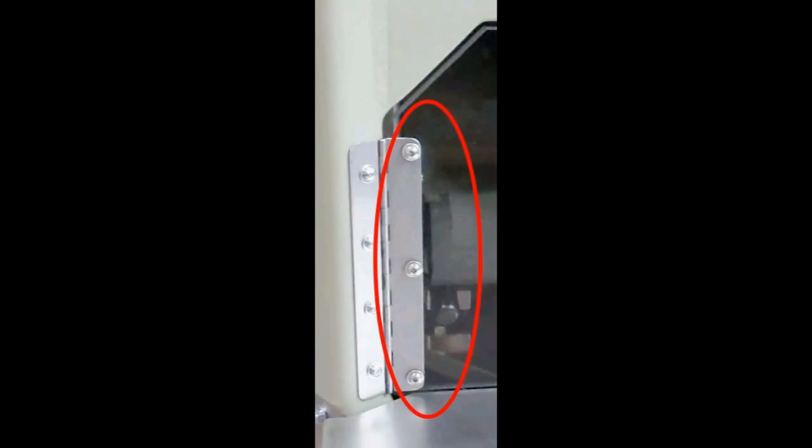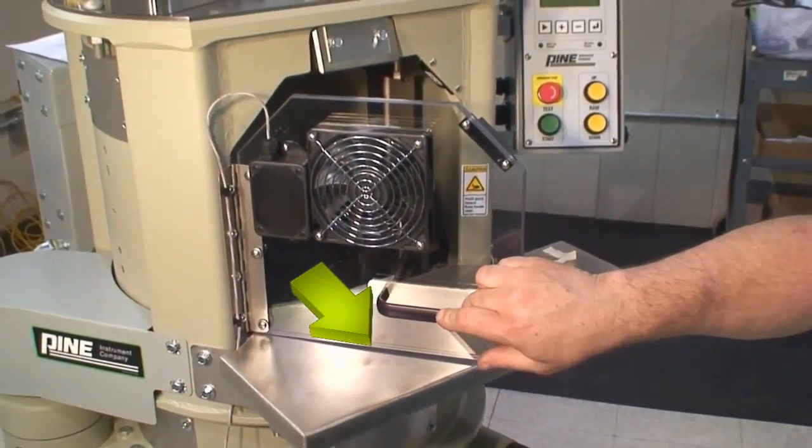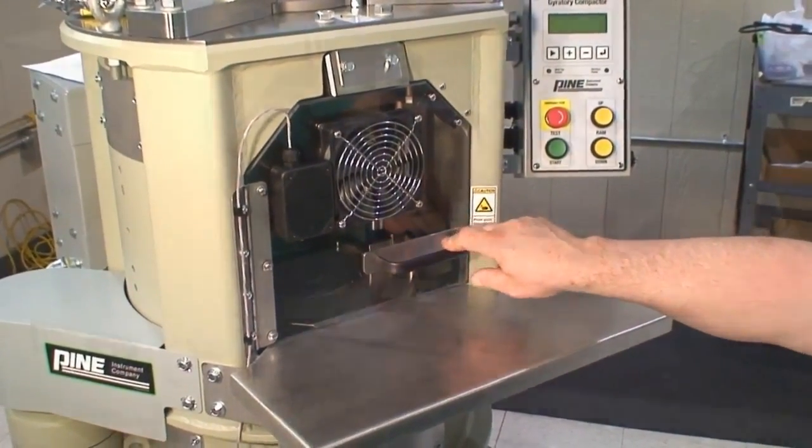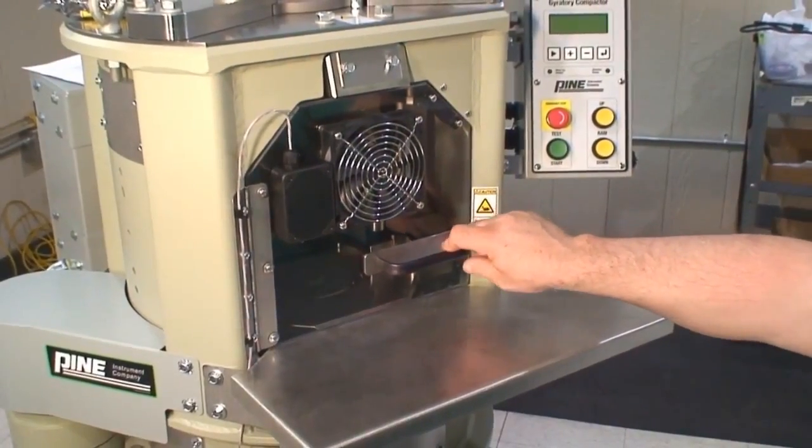Now, these three screws may need to be loosened a little bit to move the door. You want a gap at the top and the bottom of the door, and you don't want the door to drag on the work surface when you open and close it. Once you've got the door adjusted properly, tighten the three screws in the hinge and check the fit again.